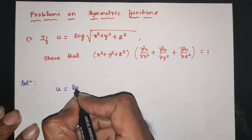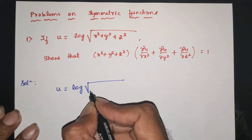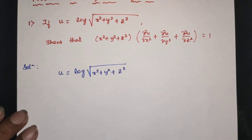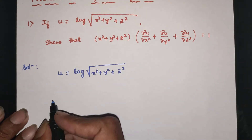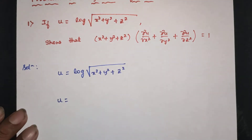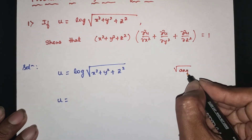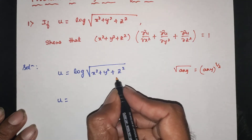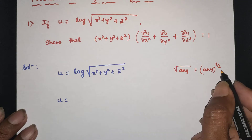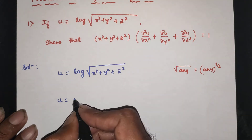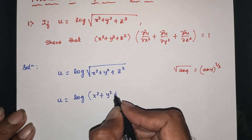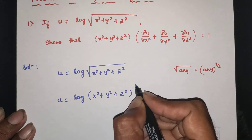u is equal to log of root of x squared plus y squared plus z squared. Root of anything is anything to the power 1/2, so root of x squared plus y squared plus z squared equals (x² + y² + z²)^(1/2). Therefore u = log of (x² + y² + z²)^(1/2). Using log m^n = n log m, u equals (1/2) log(x² + y² + z²).